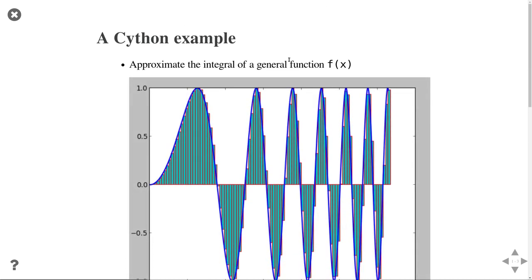Let's look at an example. We will approximate the integral of a function. The integral is simply the area below a function — if it's above zero it is additive, and if below zero it is subtracted. We approximate this integral by placing little rectangles below the function. We evaluate the function at one point, assume it's constant for a small piece, giving a step function. Since we know the area of each rectangle, we add them all up to get the total approximate area.